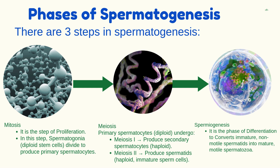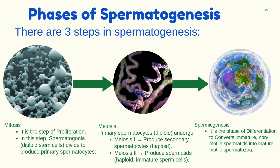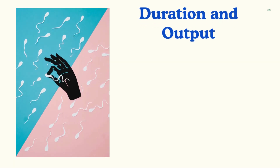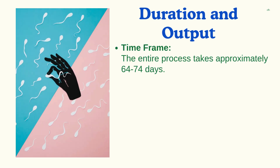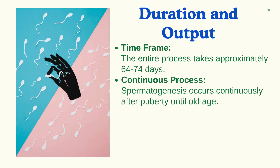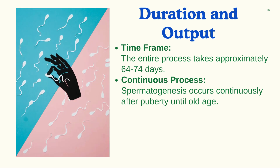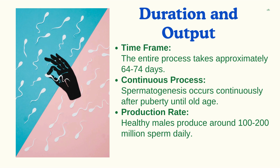The entire process takes approximately 64 to 74 days. Spermatogenesis occurs continuously after puberty until old age. In terms of production rate, healthy males produce around 100 to 200 million sperm daily.